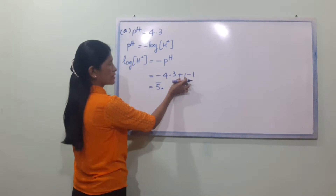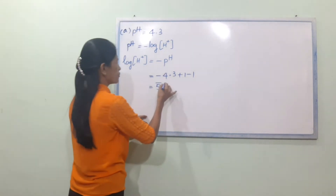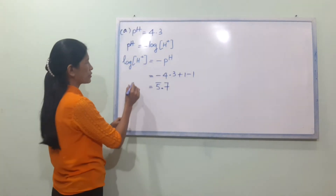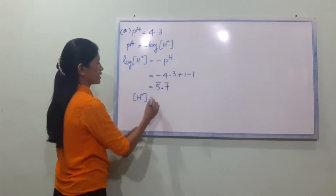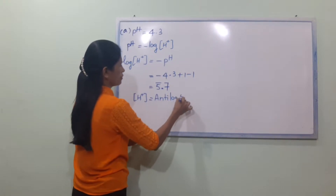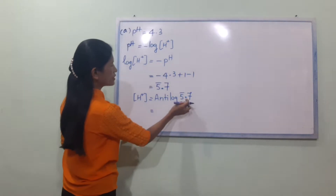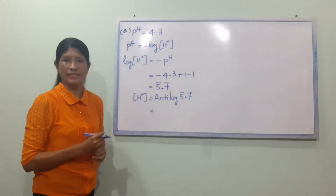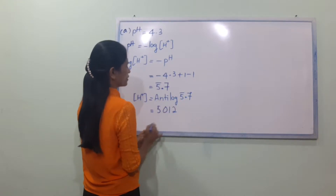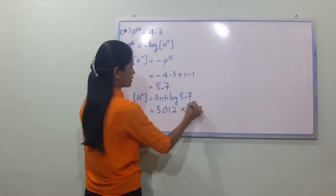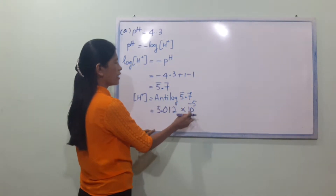Using the formula, with pH equal to 4.3, we use 10 power minus 4.3. That gives us 10 power minus 5 with 0.7, which equals 5.012 into 10 power minus 5. So the concentration is 5.012 × 10^(-5) mol per litre.